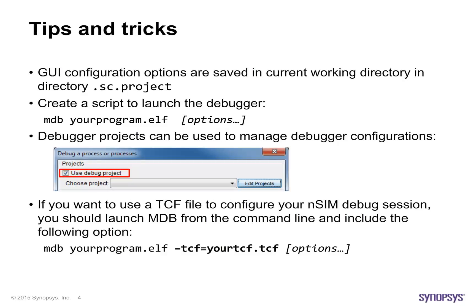Here are some other tips that can be helpful when using MDB. GUI configuration options are saved in the current working directory in a subdirectory called .sc.project. Settings will be remembered if you launch the debugger again from the same directory. However, moving to a new working directory will require you to reconfigure the options.